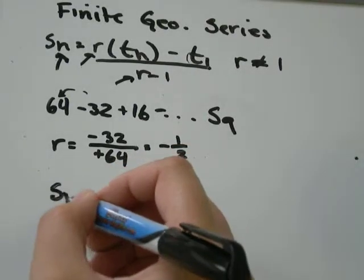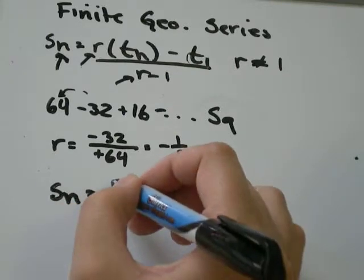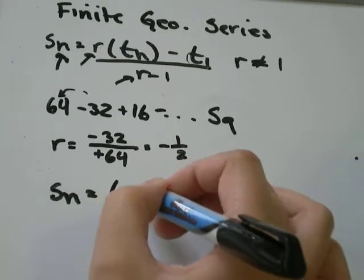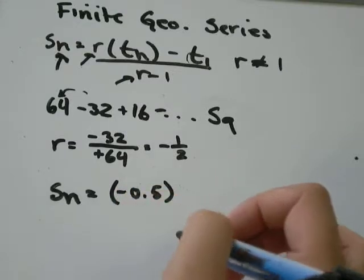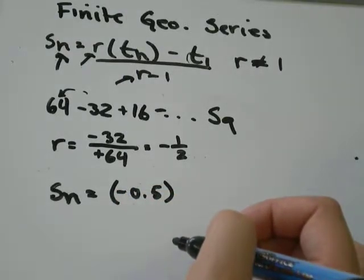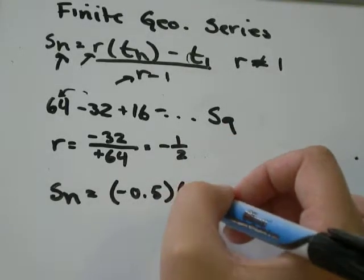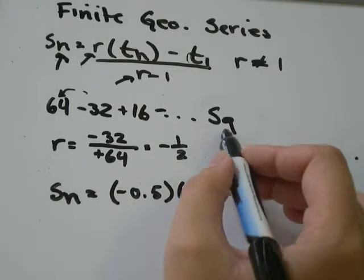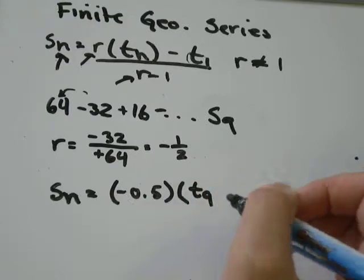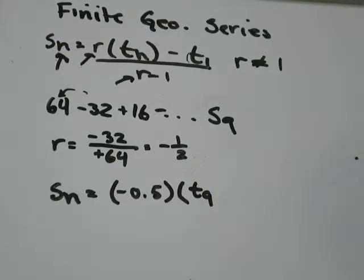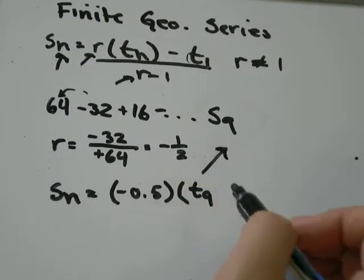So I'm just going to fill that in in our formula. And I'm just going to change that to be negative 0.5, just because a lot of people are a little more comfortable with decimals. And then we're going to multiply by, we're finding the sum of 9, so we're going to multiply by T9. Now, T9, we need to figure out what that is.